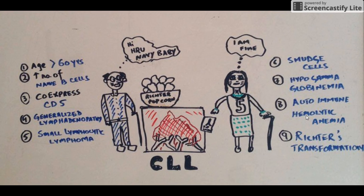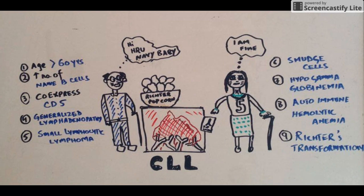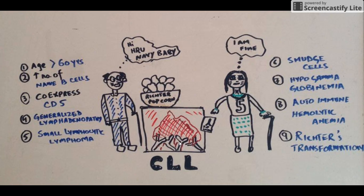Another important complication of CLL is autoimmune hemolytic anemia. Although these cells cannot produce normal immunoglobulins, when they try, they end up making antibodies against their own red blood cells, leading to autoimmune hemolytic anemia. This is shown by the fireplace — the five logs are shaped like immunoglobulins and the red fire represents hemolysis.